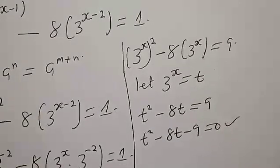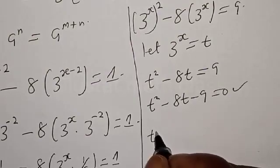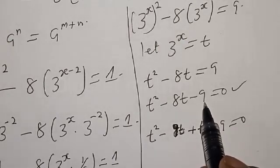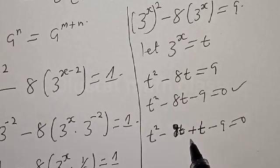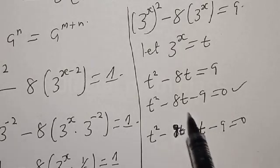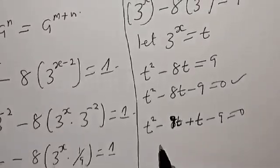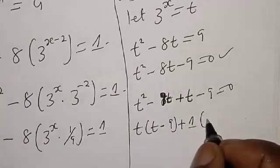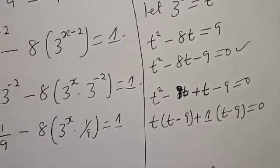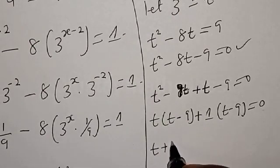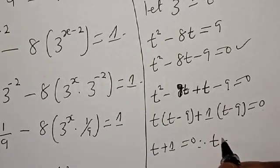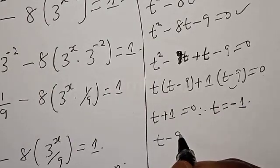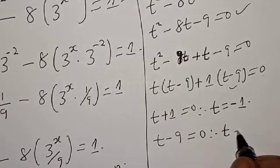This is a quadratic equation and can be solved by factorization. We need two numbers whose product is minus 9 and whose sum is minus 8: that is minus 9 and plus 1. So we have t squared minus 9t plus t minus 9 equal to 0, giving t(t minus 9) plus 1(t minus 9) equal to 0. Therefore t plus 1 equal to 0, giving t equal to minus 1; or t minus 9 equal to 0, giving t equal to 9.